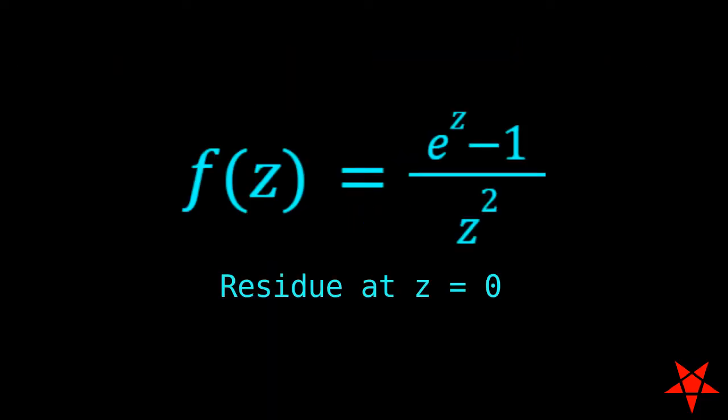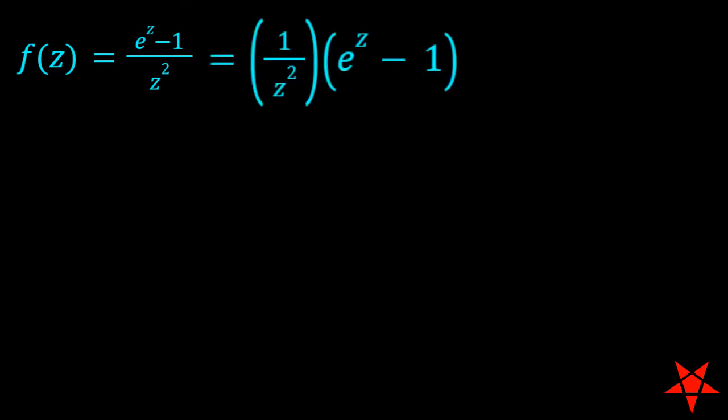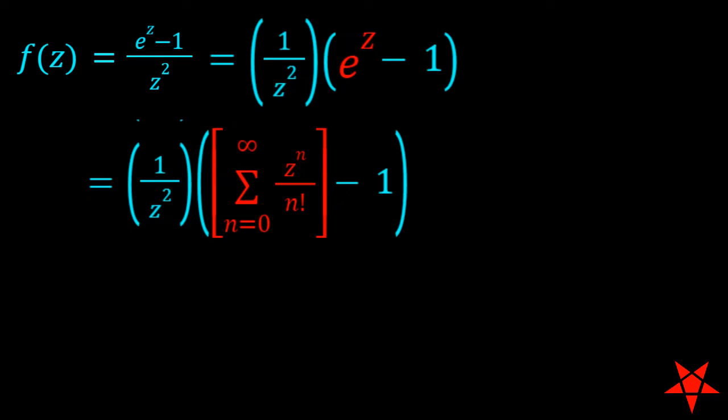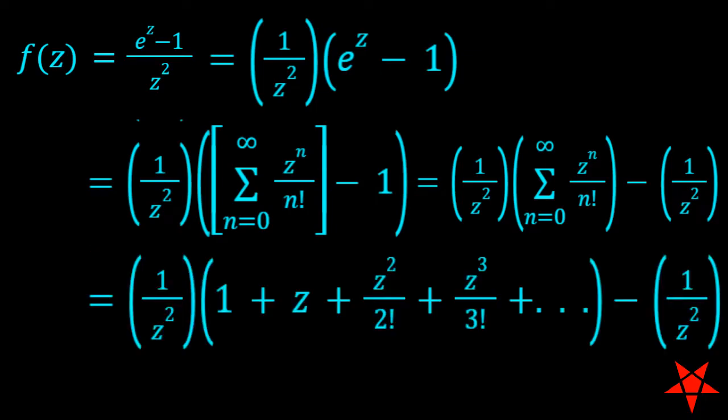Part C. Here we seek the residue of e to the z minus 1 divided by z squared at z equals 0 in the complex plane. Thus, a Laurent series centered at z equals 0 is called for. We will begin by factoring out the z squared term in the denominator and converting e to the z into its corresponding Taylor series. Next, we distribute 1 over z squared across the bracketed terms, and then expand the aforementioned Taylor series into its individual terms.